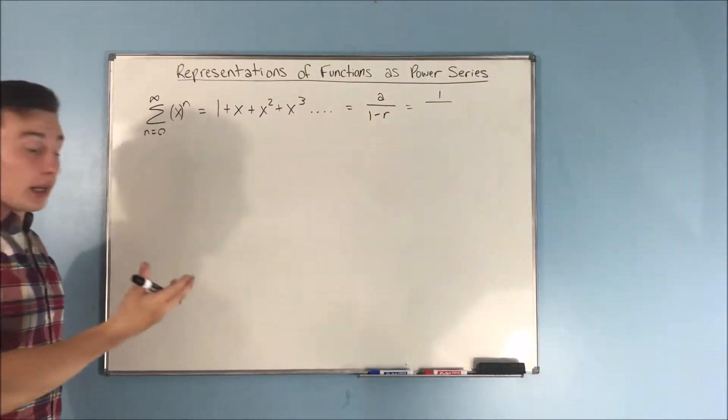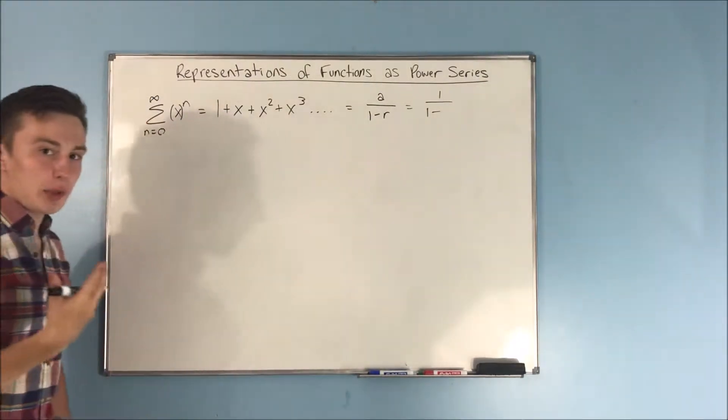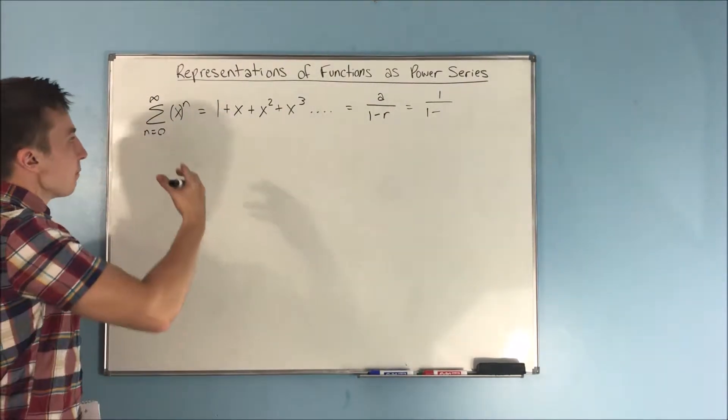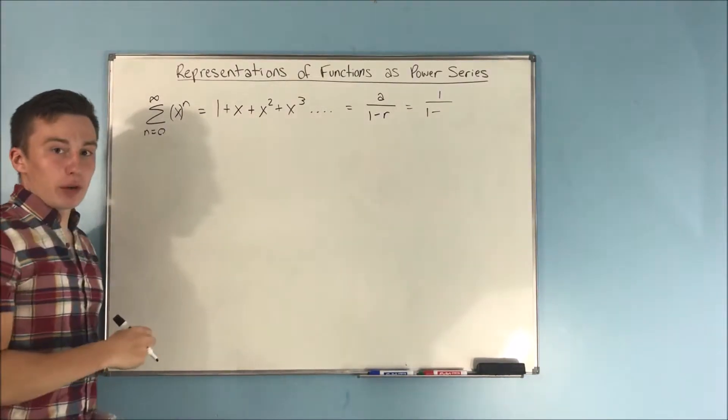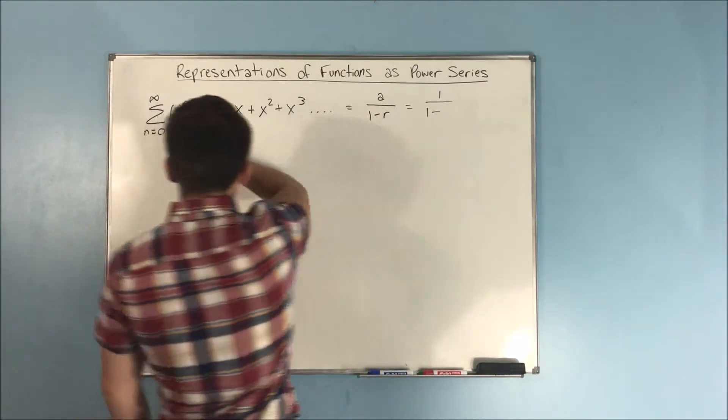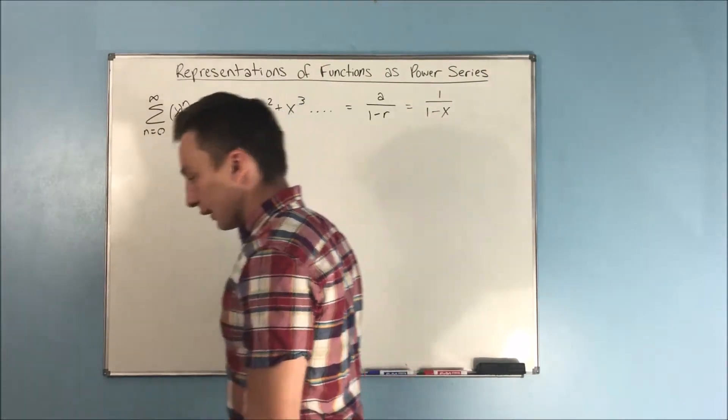Now we have a 1 minus, right? That's just going to come down. And we have an r. What's our common ratio? That's what r stands for, right? Well, we're just multiplying by x every time. So our common ratio is x, and of course our common ratio is right here. So we get a 1 over 1 minus x.